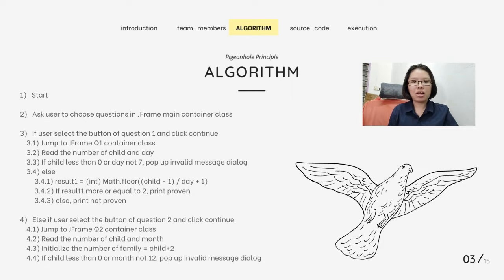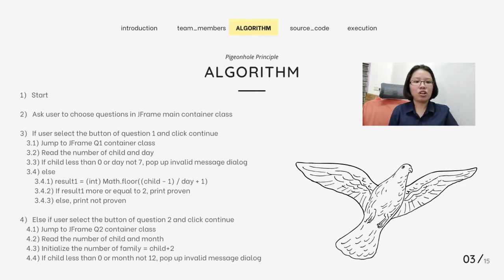If result 1 is more or equal to 2, it will print the proven statement. Else, it will print the not proven statement. Fourth, else, if the user selects the button of question 2 and clicks continue, it will jump to the Java frame question 2 container class and read the number of child and month. It will initialize the number of family equal to child plus 2, which is the number of the father and mother. If the child is less than 0 or month is not equal to 12, it will pop out the invalid message.